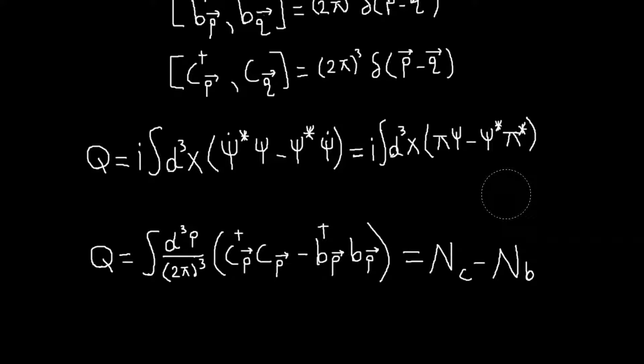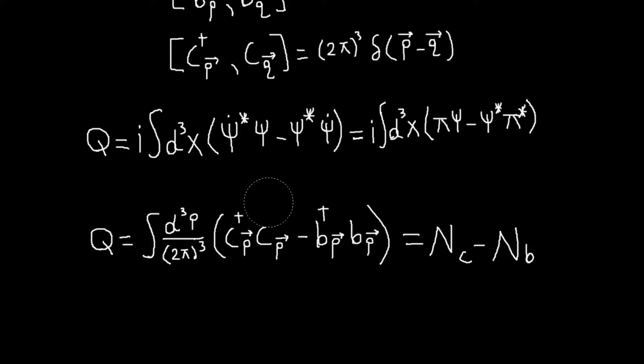And basically what that means is what we're going to interpret this as meaning is that the C and B particles are antiparticles to each other. So if you imagine the particle has a charge and the antiparticle has the opposite charge, then obviously to conserve charge, the relative number of particles has to stay the same. So if you create a C particle, you must annihilate the B particle and vice versa.